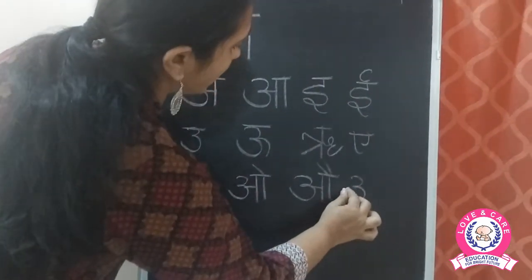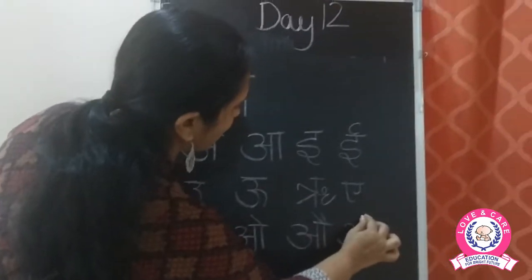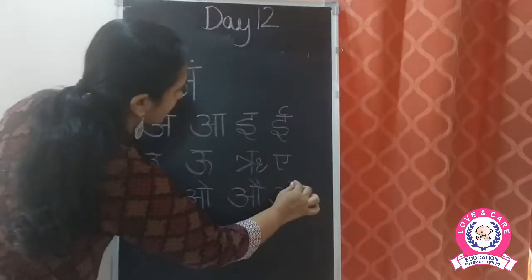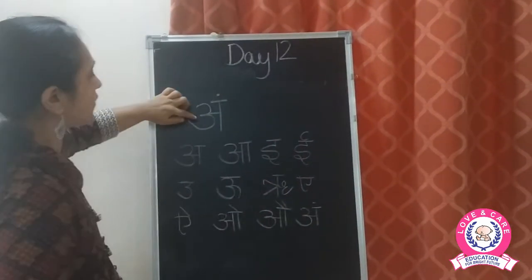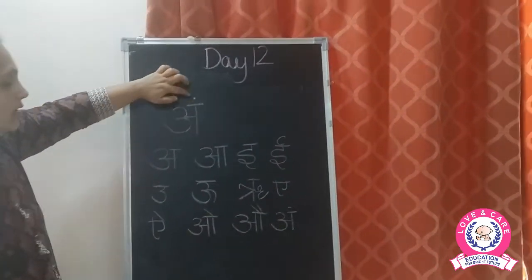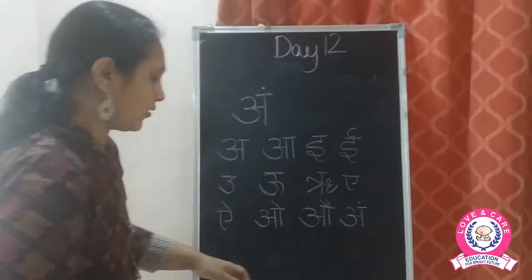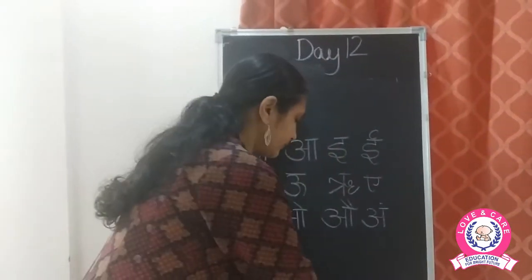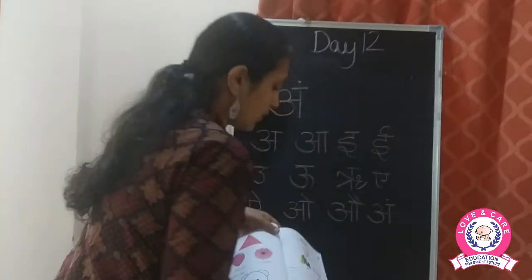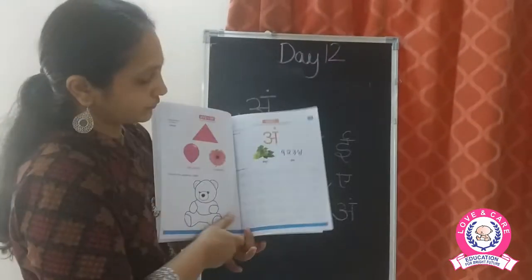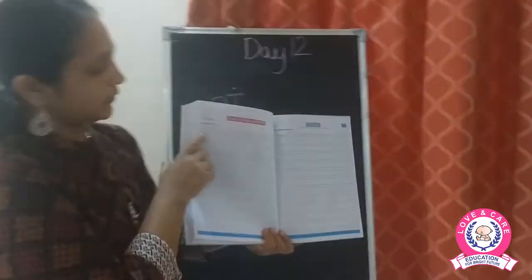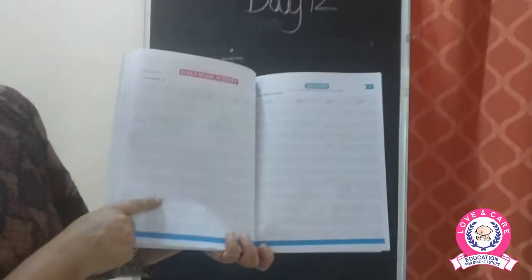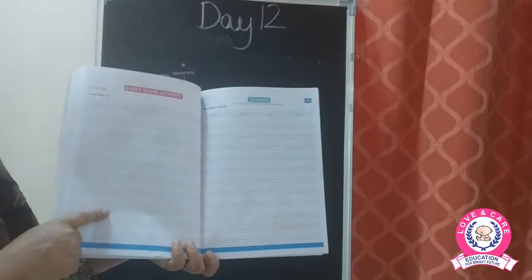Today we are learning the Hindi letter with the anusvara. You only have to write the O and then make a dot on top. On the next page also, you have to write this letter.